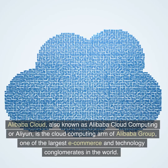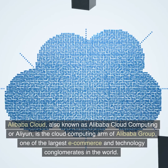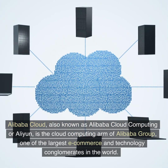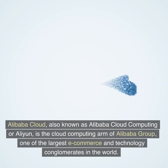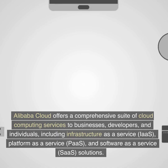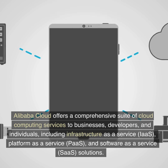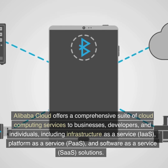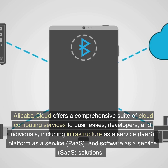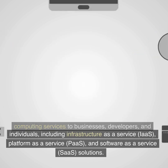Alibaba Cloud, also known as Alibaba Cloud Computing, is the cloud computing arm of Alibaba Group, one of the largest e-commerce and technology conglomerates in the world. Alibaba Cloud offers a comprehensive suite of cloud computing services to businesses, developers, and individuals, including Infrastructure as a Service (IaaS), Platform as a Service (PaaS), and Software as a Service (SaaS) solutions.